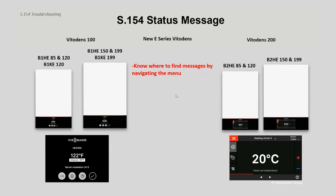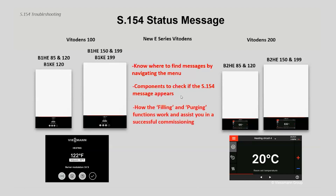You'll know where to find those messages confidently after this presentation. What is involved in the S154? There are a couple of components involved — internal to the boiler as well as external influences. We'll look at the main components inside the boiler that would be involved in possibly troubleshooting or identifying the S154. How the filling and purging functions work — when you commission these boilers, you go through either using the HMI or the vGuide app on your electronic device.